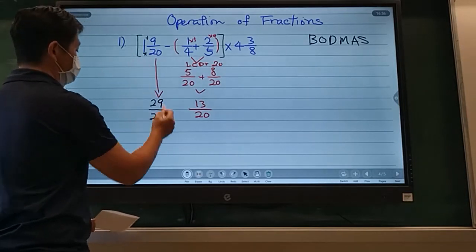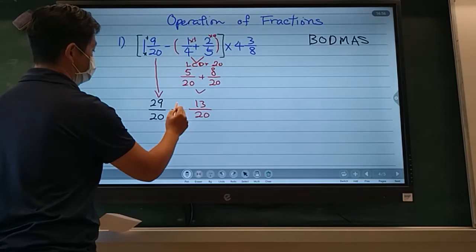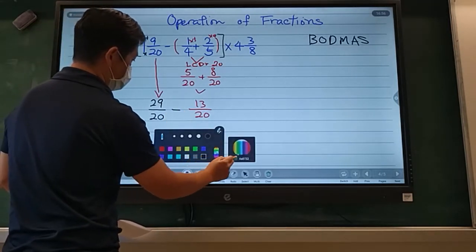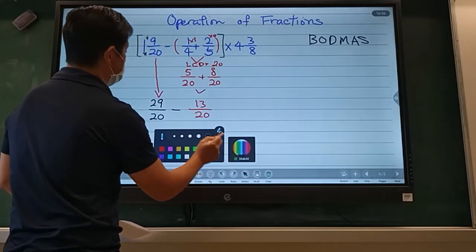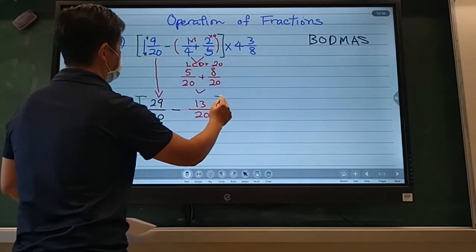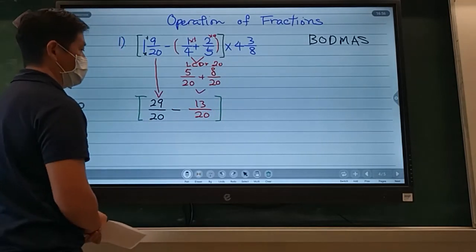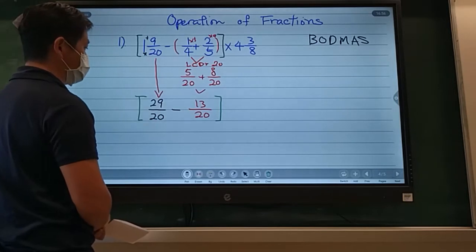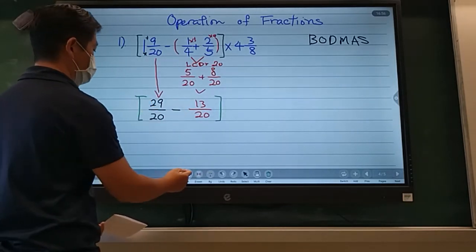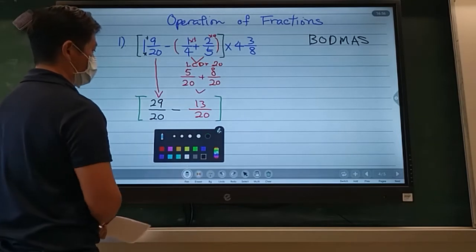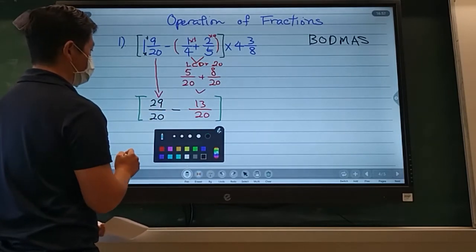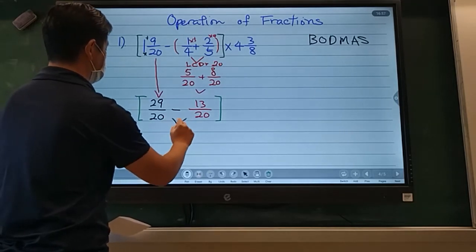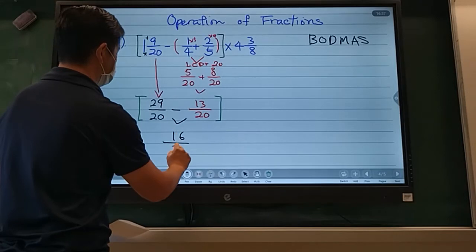Now remember, this one, we're still in the bracket. So minus. And notice, I have a bracket. Okay? So doing the bracket, I need to subtract, which is twenty-nine minus thirteen. I would get, what would I get? Twenty minus thirteen is sixteen.